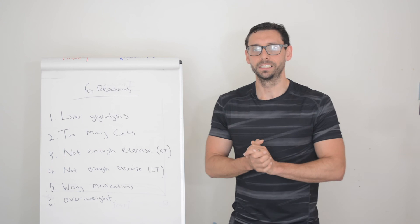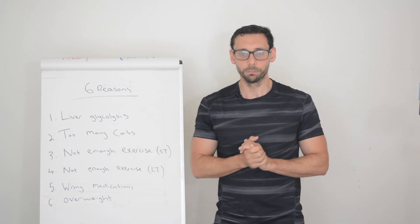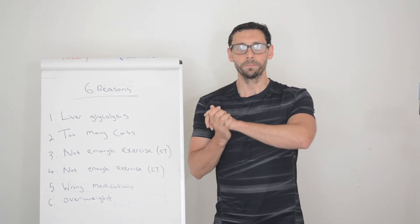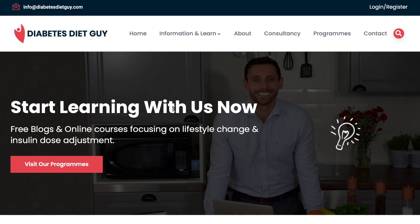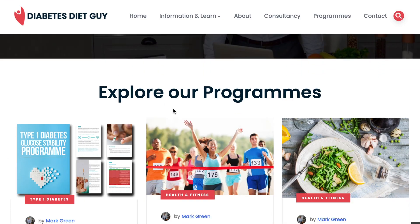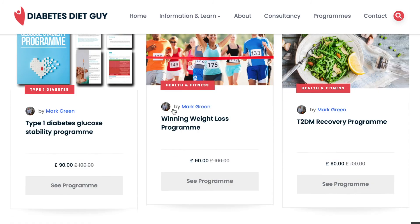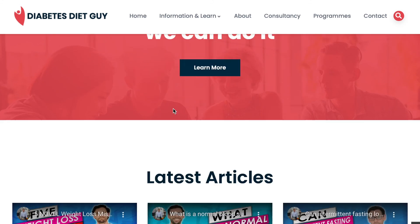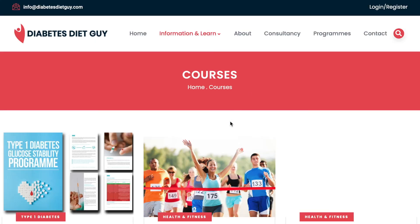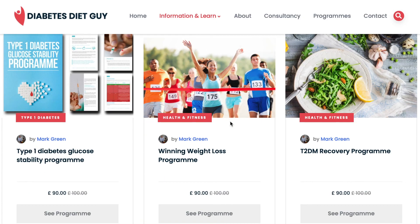So there you have it guys, six reasons why you have high glucose levels with type two diabetes and what you can do about it. I hope you found it useful. Remember to check out the blog, diabetesdietguide.com. This is the sort of stuff we're always talking about with our clients and on our online programs. If you need an extra helping hand to overcome those challenges you're facing, go check it out. Or if you just want some free information, head over to the blog. It's all there for you.